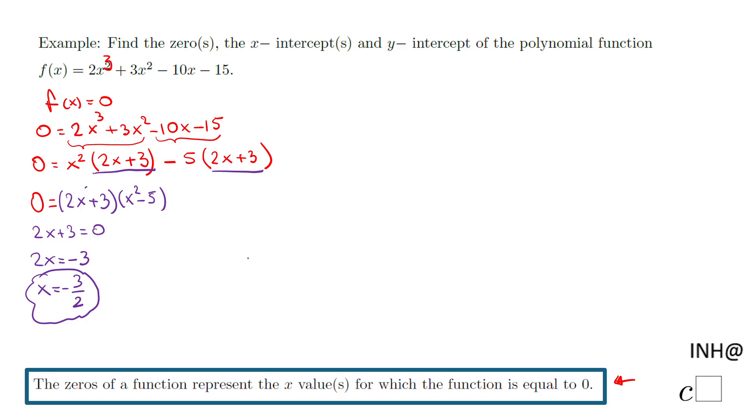Do we have more zeros? Yes, because we have the second factor x² - 5. We're going to make that equal to 0, add 5 on both sides to get x² = 5, and then take the square root. Don't forget to put ± and we have the other two zeros: x = √5 and x = -√5.